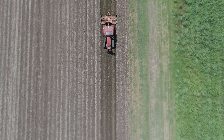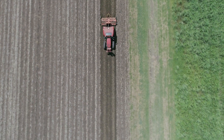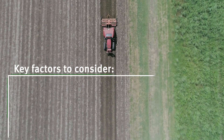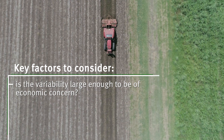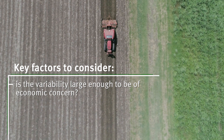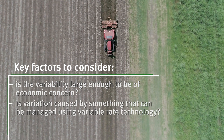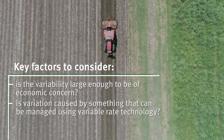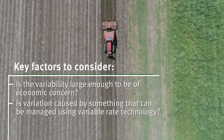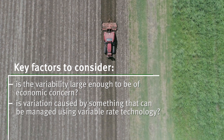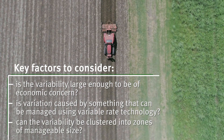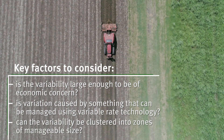Key factors to consider with a variable rate technology approach include: Is the variability large enough to be of economic concern? Is the variation caused by something that can be managed using VRT, such as nutrient deficiency or pH? And can the variability be clustered into zones of manageable size?